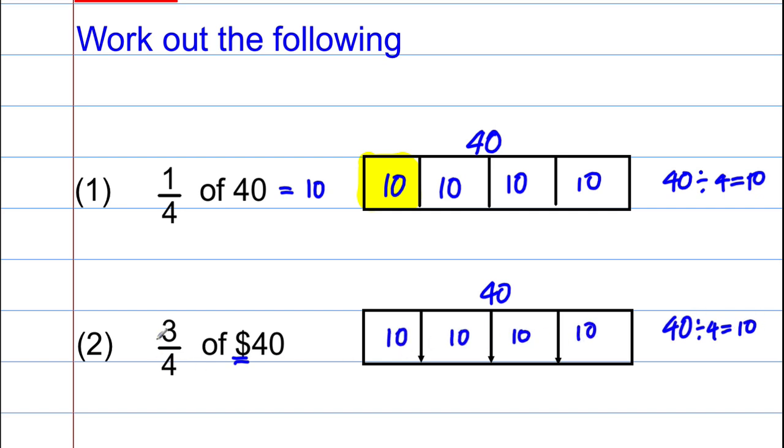But this time, we want three of the quarters. We want three of those quarters, so this is the amount we want, which is 10. Add 10 is 20. Add another 10 is 30. Key thing here. Don't just write equals 30. 30 what? $30. There may be a mark for the unit in the exam.